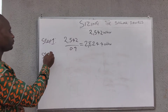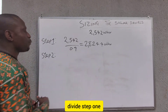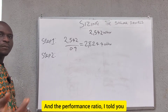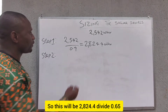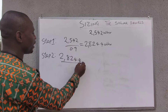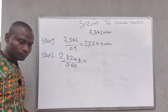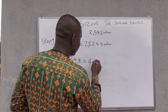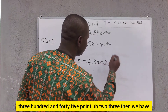Step 2: divide the result from Step 1 by the performance ratio of the panel. We are using 0.65. So 2,824.4 divided by 0.65 gives us 4,345.23.